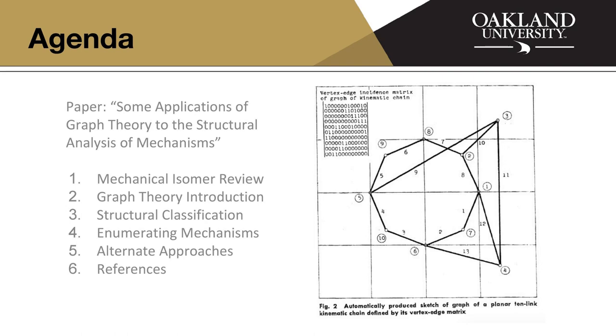First, I'm going to talk about mechanical isomers, introduce that, and review it a little bit. Then I'm going to talk about graph theory, introduce that. I'll walk through an example of how to apply graph theory. And then I'm going to talk about the structural classification, which is kind of where this paper comes in. It's a way of using graph theory to predict and identify and create mechanisms.